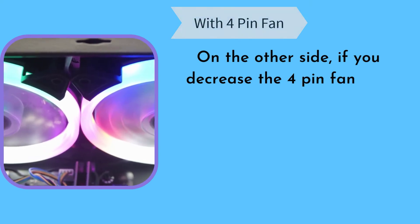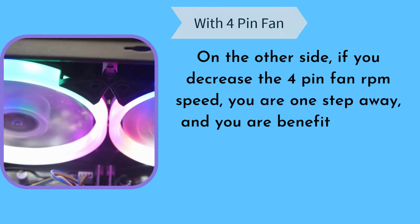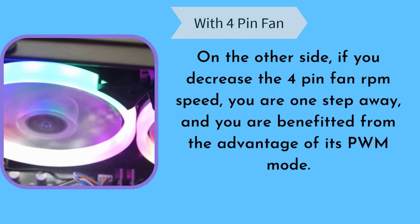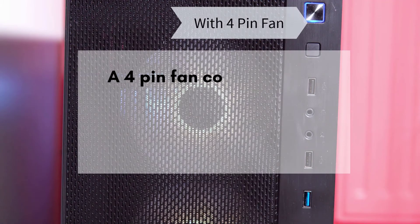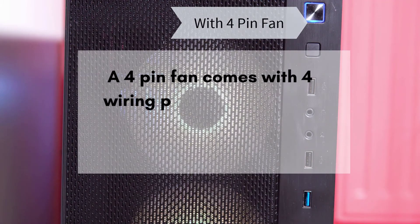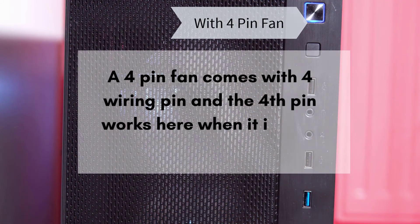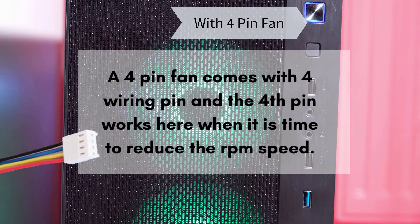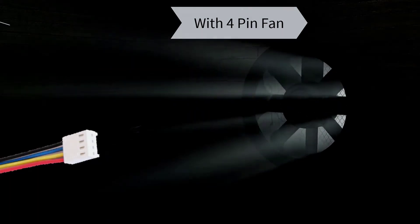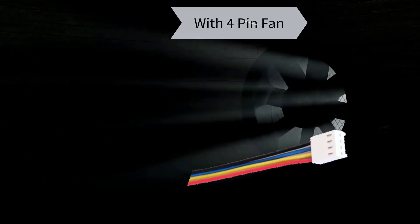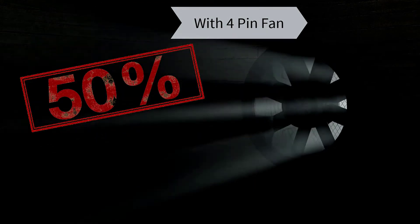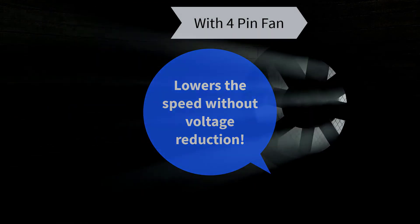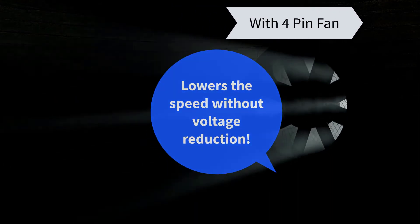On the other side, if you decrease the 4-pin fan RPM speed, you are one step away from its PWM mode. A 4-pin fan comes with 4 wiring pins, and the 4th pin works when it is time to reduce the RPM speed. Even if you lower fan speed to 50%, it still runs with the same maximum voltage rating of 12V. All credit goes to the PWM mode.